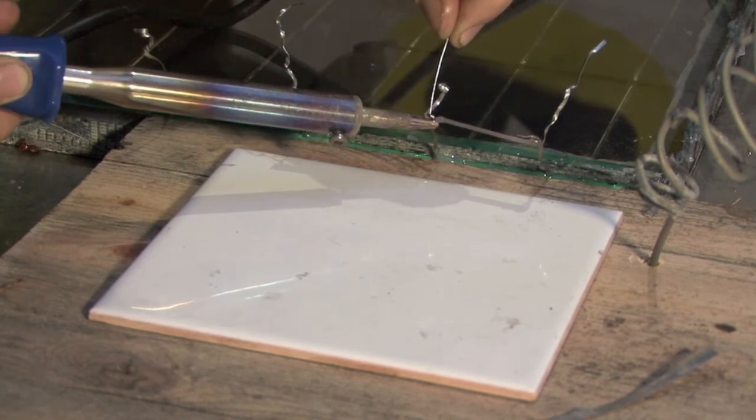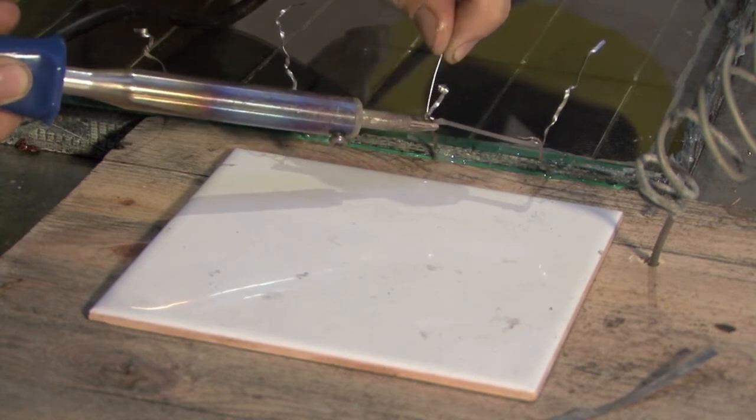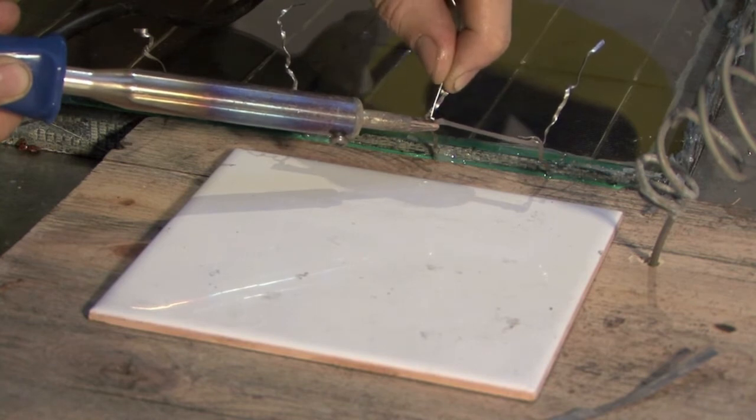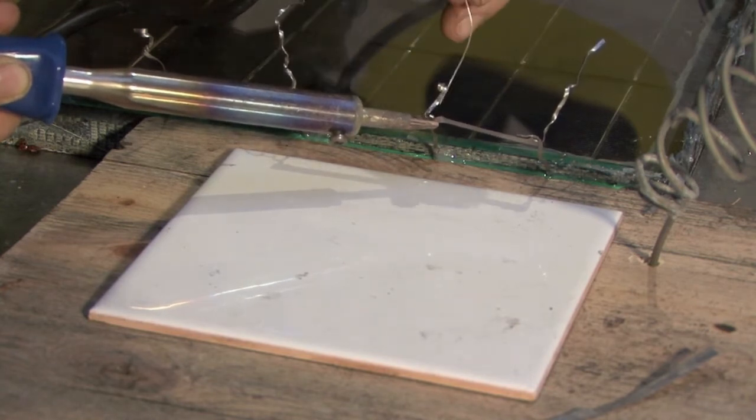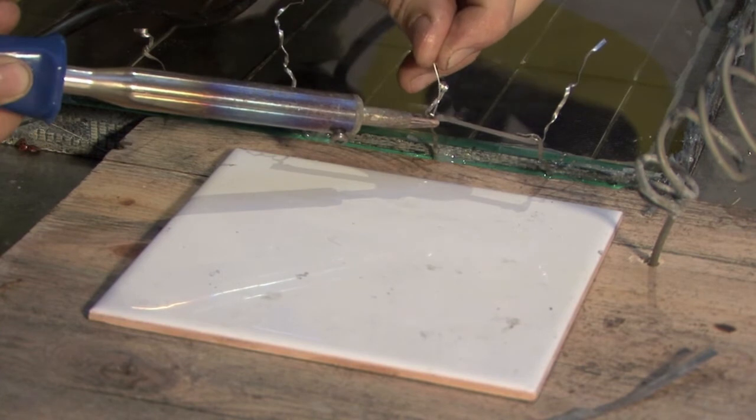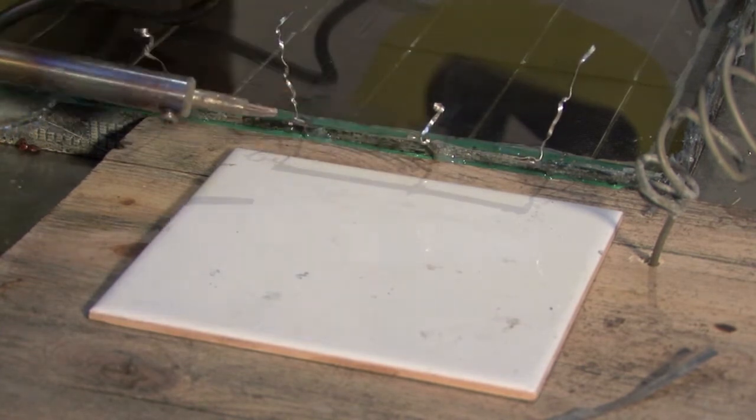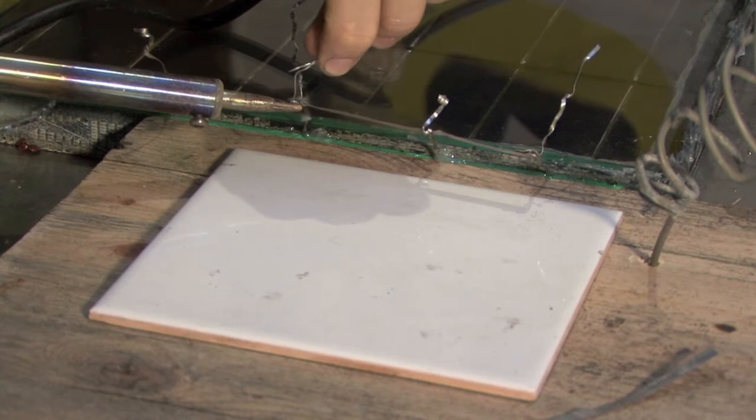If you run out of solder or you don't have any, you can actually just hold the hot soldering iron onto the tabbing wire and press them together. Because there's solder in the tabbing wire, that will also seal the connection.